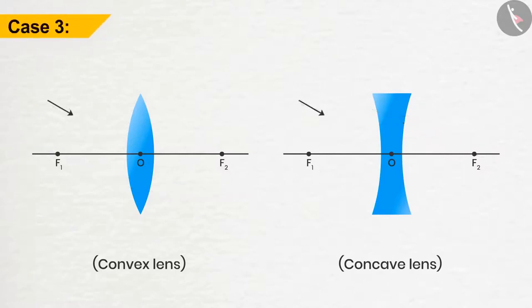In case 3, if the ray of light passes through the optical center, then after refraction, they will emerge without any deviation.